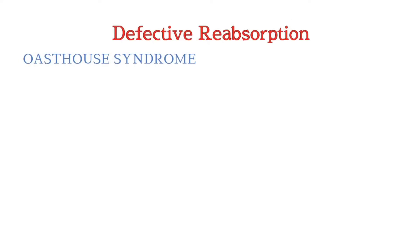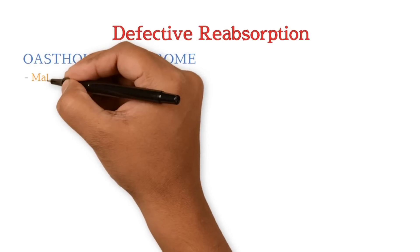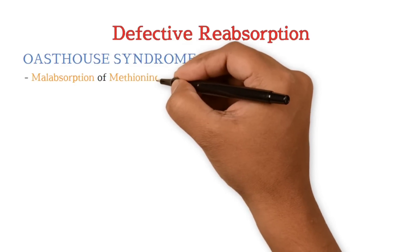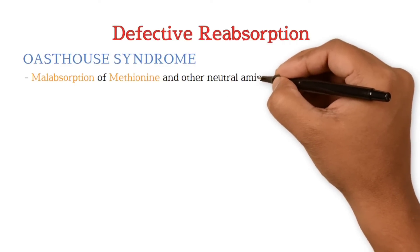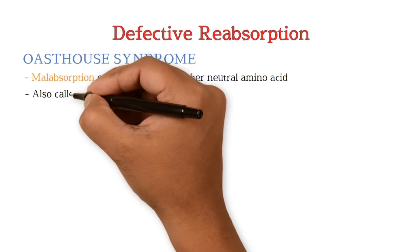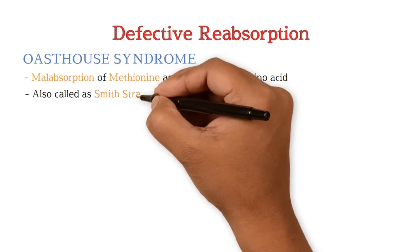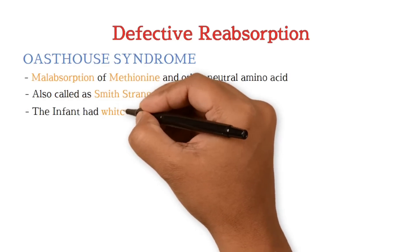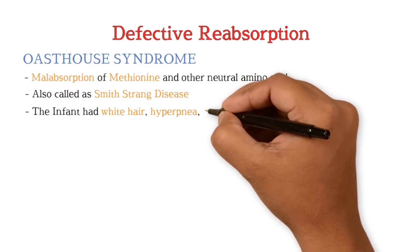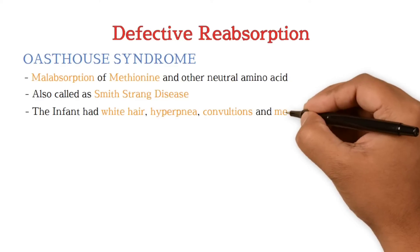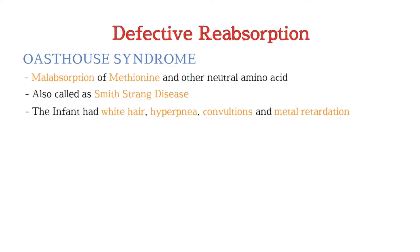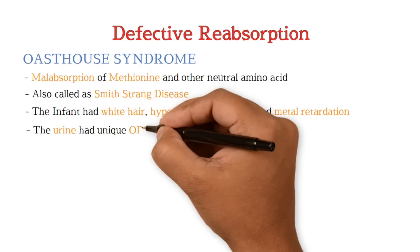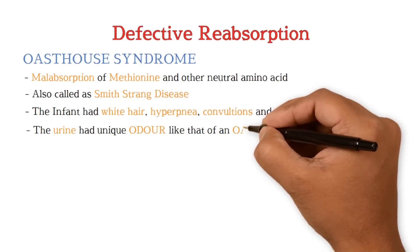The second condition is Oast house syndrome. There is malabsorption of methionine and other neutral amino acids. It is also called Smith-Strang disease. The infant presents with white hair, hyperpnea, convulsions, and mental retardation. The urine has a unique odor like that of an oast house.